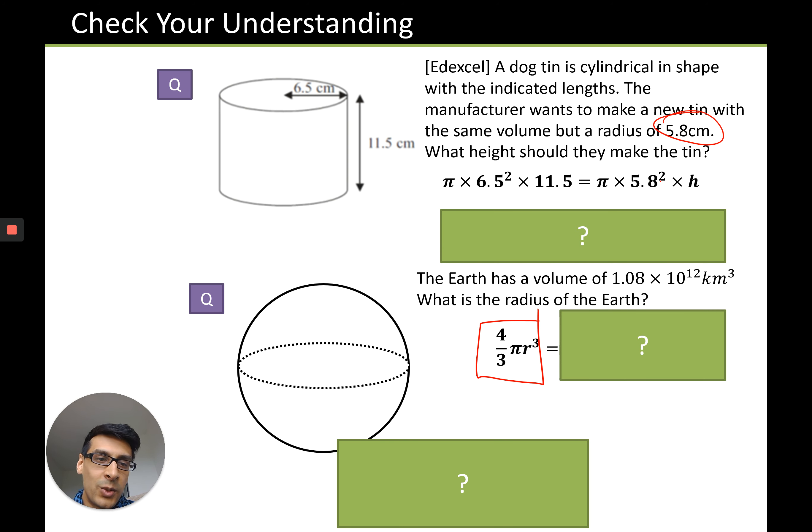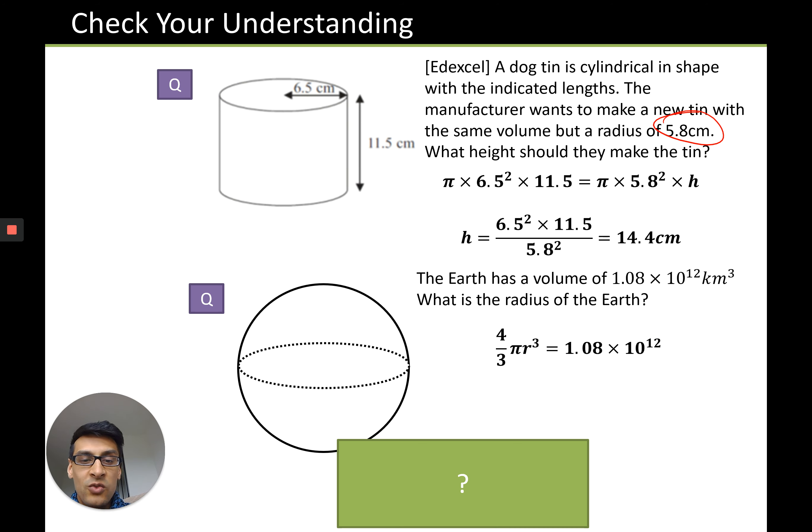Now the volume of the new cylinder is going to be pi times 5.8 squared times h, and then you can just rearrange by moving everything over to get 14.4 centimeters. Question two, you're told that the Earth has a volume given here, what's the radius? So it's just four over three pi r cubed equals the number that you've been given.